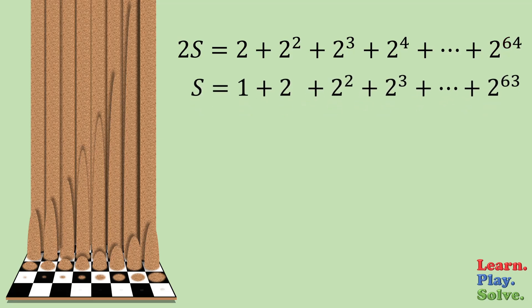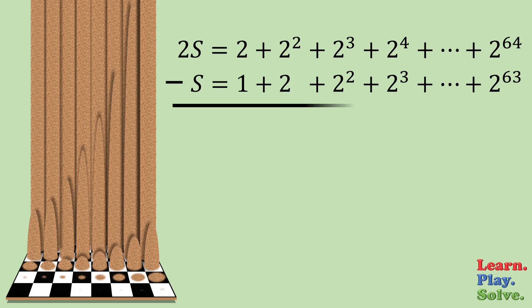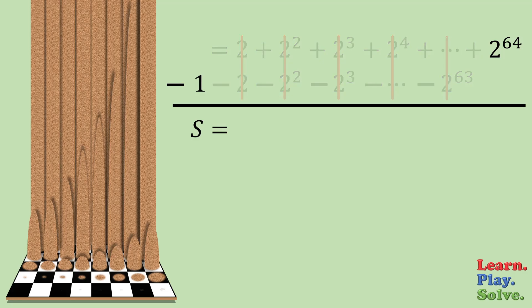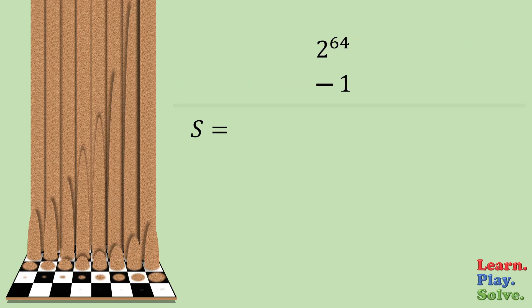Now let's subtract the original equation from this one. 2S minus 1S is 1S. And for the other side, if we shift every term over one place and distribute the negative, we can see that most of these terms will cancel out when we subtract. All we have left is 2 to the 64th minus 1.